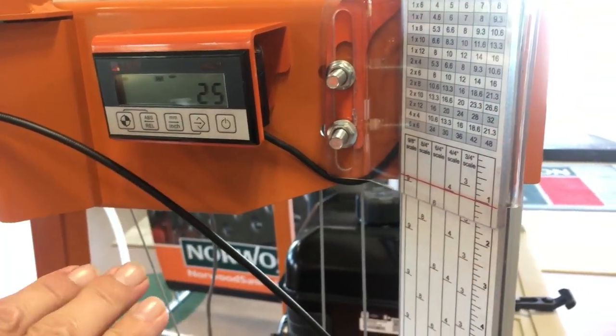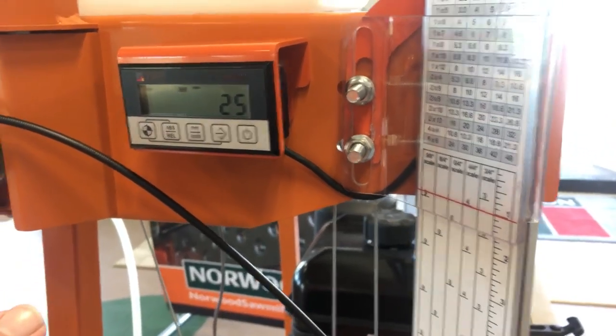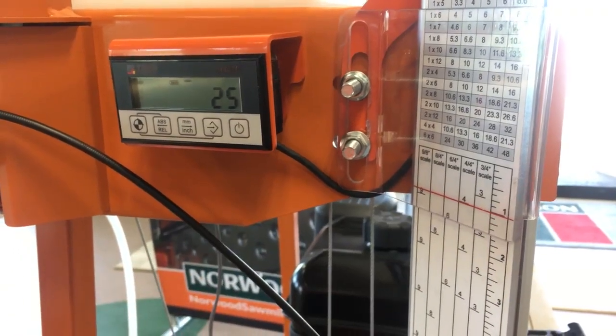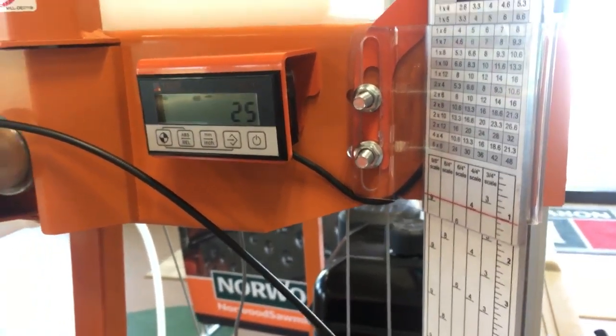So what this is referenced to is it shows you how far that blade is off of the bunk. So right now, bottom of the blade, top of the bunk, 25mm in between.